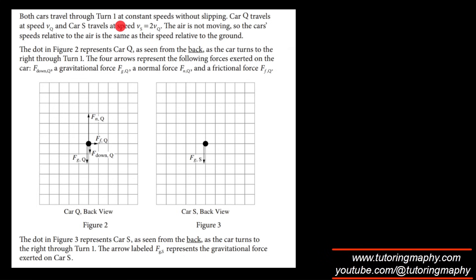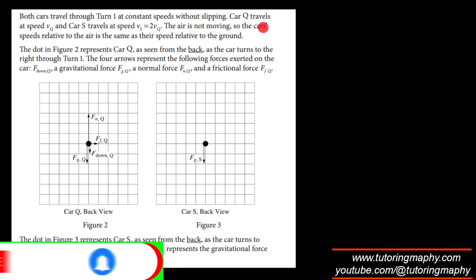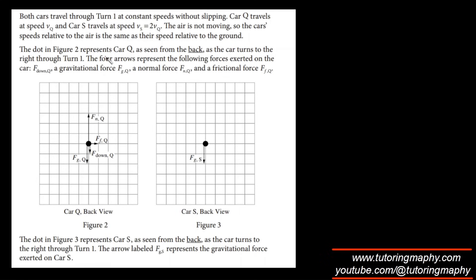Both cars travel through turn 1 at constant speeds without slipping. Car Q travels at V_Q and S travels with twice V_Q. The air is not moving, so the car's speed relative to the air is the same as their relative speed to the ground. Alright, fair enough. The dot in figure 2 represents car Q as seen from the back as the car turns to the right through turn 1. The four arrows represent the following forces exerted on the car: F_down Q, a gravitational force on Q, a normal force F_N makes sense, and a friction force that is helping the circular motion.